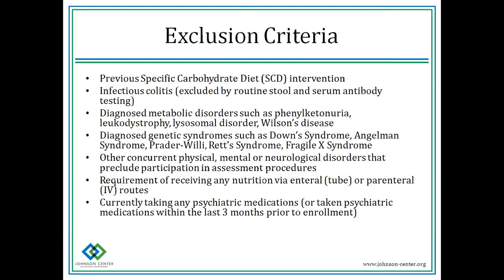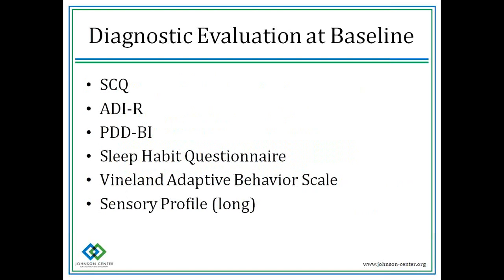Children who could not be served included kids with any infectious colitis testing, any child who had followed or was currently on SCD, anyone with a metabolic disorder, a genetic disorder, or any other concurrent physical, mental, or neurological disorder that would have precluded participation in our assessments, and any child on a new psychiatric medication or receiving enteral or parenteral IV nutrition. We also wanted to verify diagnosis of all participants to confirm they had an autism spectrum disorder — each child went through the SCQ, the ADIR, and the PDDBI.